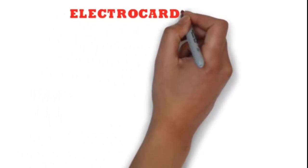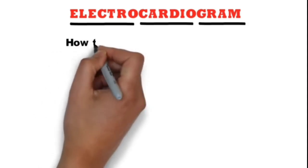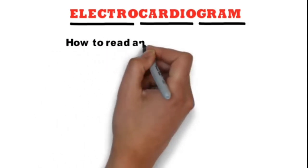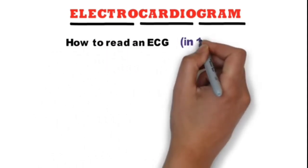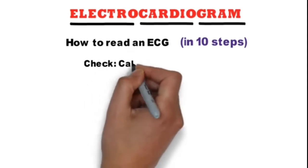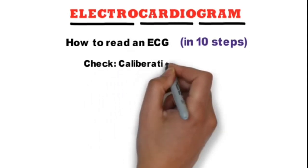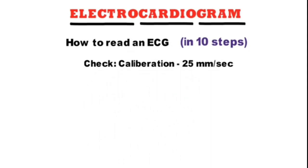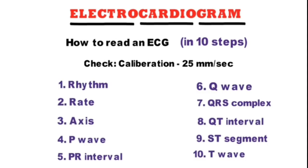ECG is a graphical representation of electrical activity going on in the heart. Now how to read an ECG in just 10 steps. Before that we have to check calibration or speed of the machine, which is normally set at 25 mm per second. So we will discuss ECG interpretation in this manner.